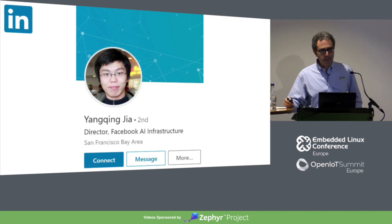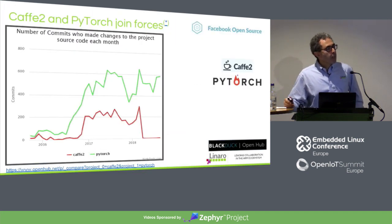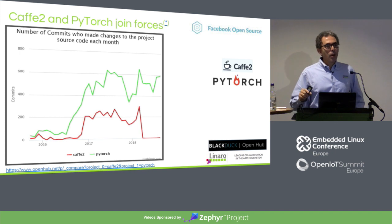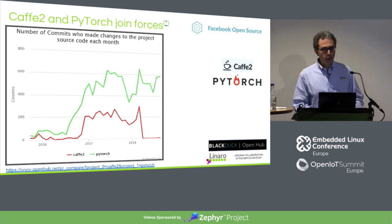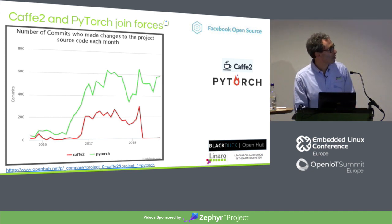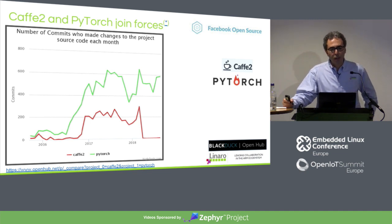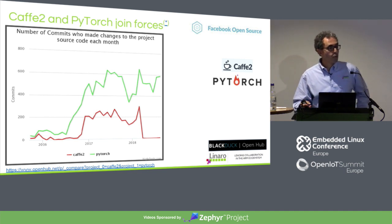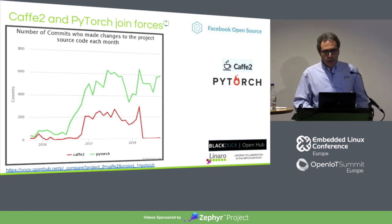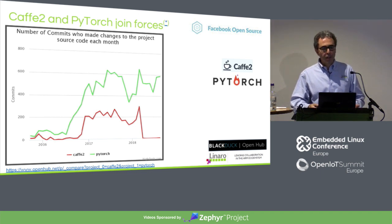Recently, last March, a change started. The Caffe2 project and PyTorch project — both machine learning frameworks endorsed by Facebook — started a merge. You can see it from the commit graph: from March 2018, all commits to Caffe2 have been redirected. So you see things are very dynamic and fluid in this space.